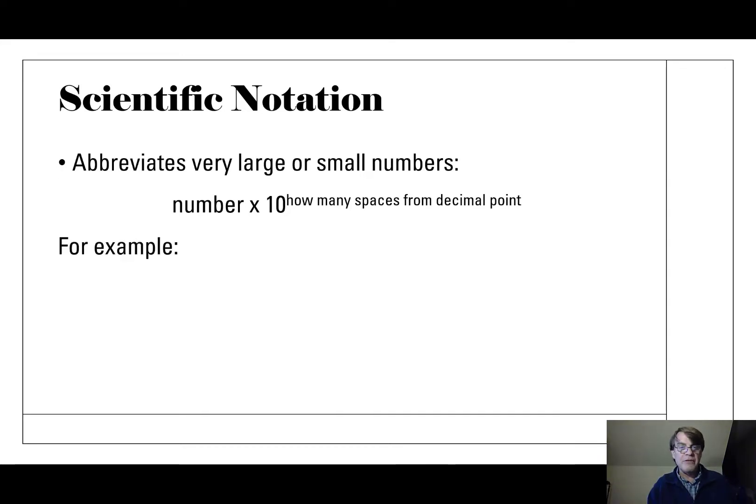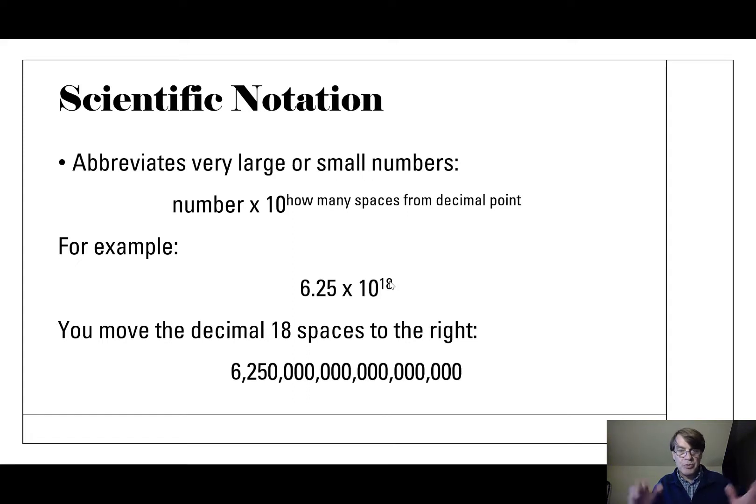We saw this in the previous video, right? We saw that this is one coulomb of electrons. I've got one coulomb of electrons here. How much is that? Well, that's 6 quintillion, 250 quadrillion electrons. What does that mean? It's a 6 with 18 spaces after it. 6, 2, 5, and then 16 more spaces after it. It is a really large number.